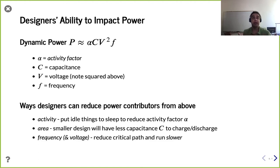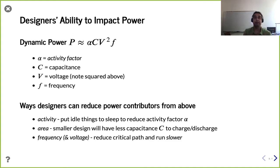Even without deliberate intervention, the activity factor will be less than one in practice because some signals don't change every cycle. That scales back the power — we aren't charging every capacitance every clock cycle. That's the concept the activity factor is capturing.